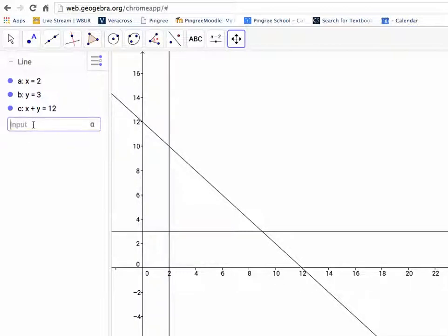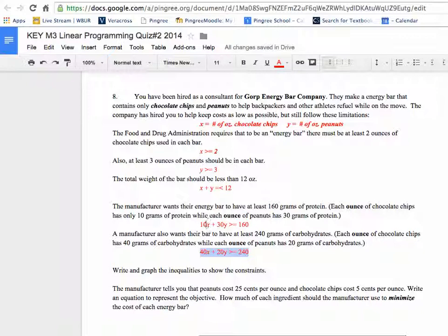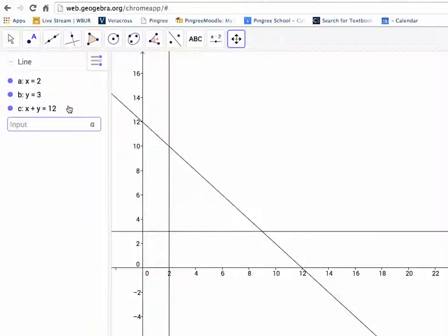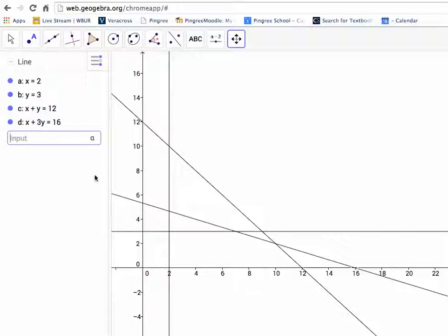So what was my next constraint? It was, maybe let me go back and refresh my memory here. It was 10x plus 30y is going to be equal to 160. So I type in 10x plus 30y equals 160. And there we go. That is that constraint. I'm shading above that.